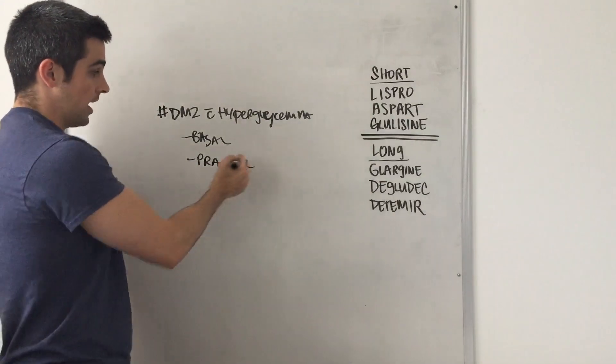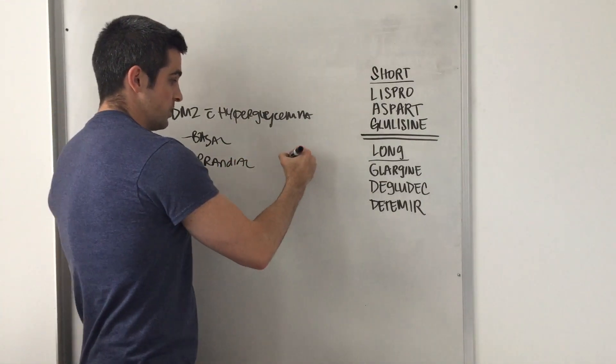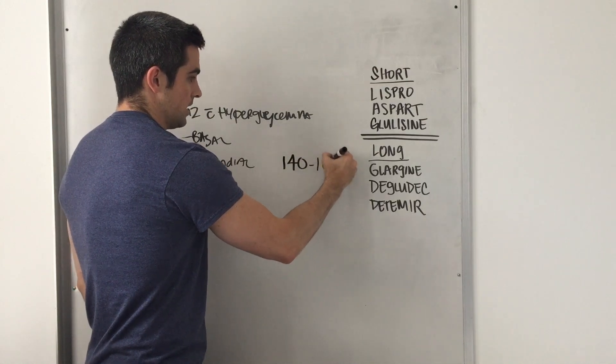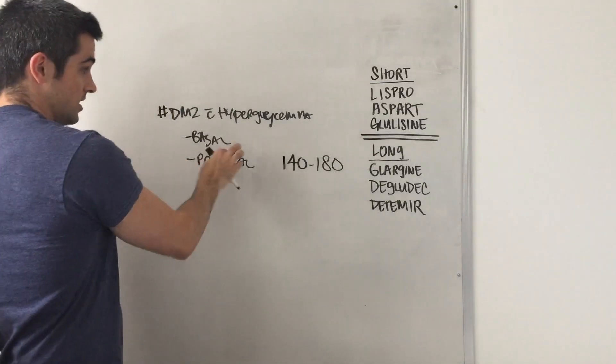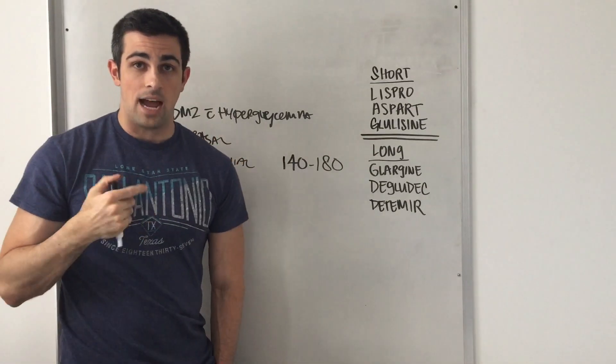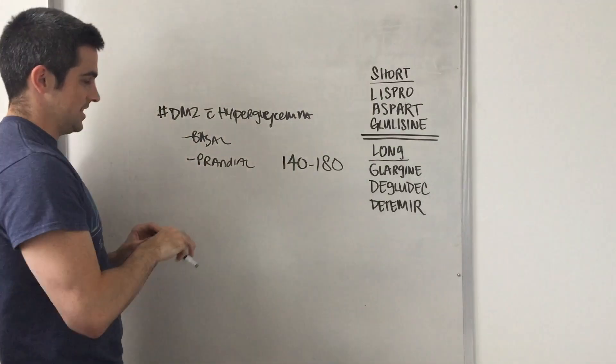And you know if their prandial is working is if their glucose is able to go back down. And our range that we want is between 140 and 180, which is important. The second thing that we're going to want to check is their basal level. How is their basal level? Are they adequately basalized with insulin?